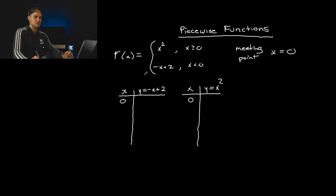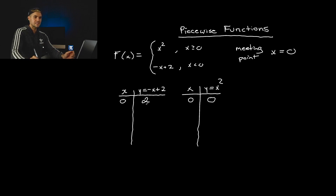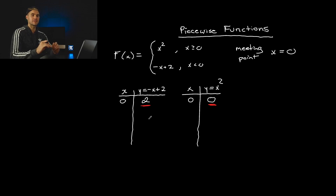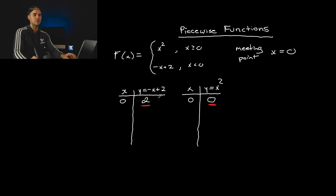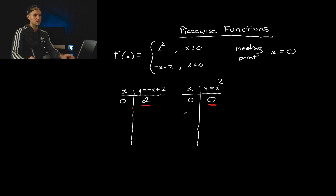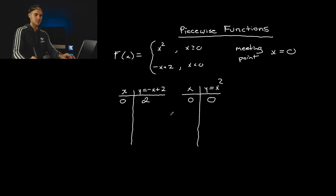Let's fill in these tables. Plugging in zero for y equals negative x plus two gives me two. Plugging in zero for x squared gives me zero. Now, without even graphing it, because these y-values are different at the meeting point of x equals zero, right away I know this function is going to be discontinuous — there's going to be a jump from one y-value to the other. If these were the same, then the function would be continuous throughout. If at that meeting point the y-values of the pieces are different, then we know the function is going to be discontinuous.